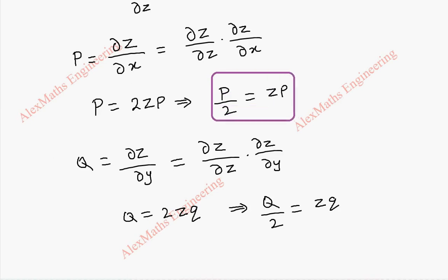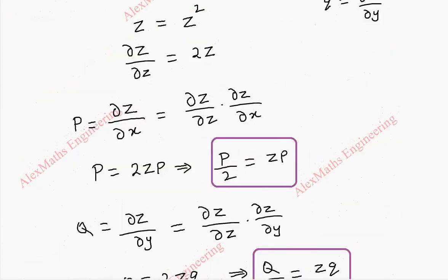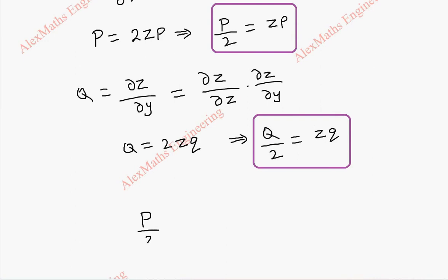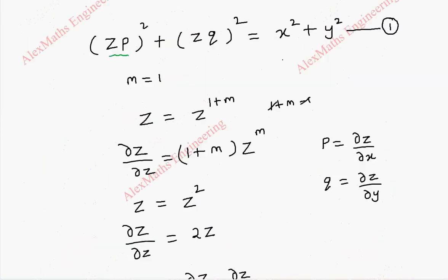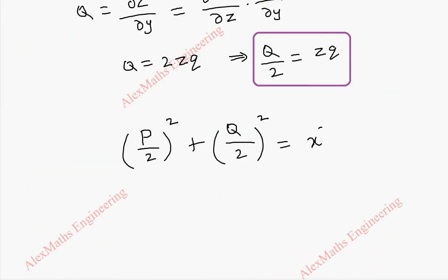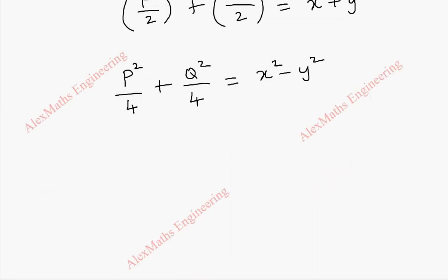After getting z·p and z·q, we are going to substitute in equation 1. Now, z·p whole square is capital P by 2, whole square; plus z·q whole square, which is capital Q by 2, whole square. And on the other side we have x squared plus y squared. This can be rewritten as capital P squared by 4, plus capital Q squared by 4, equal to x squared plus y squared.